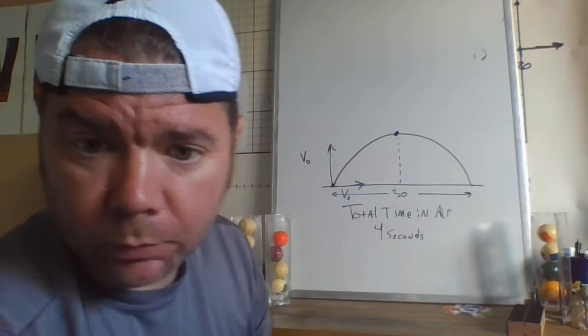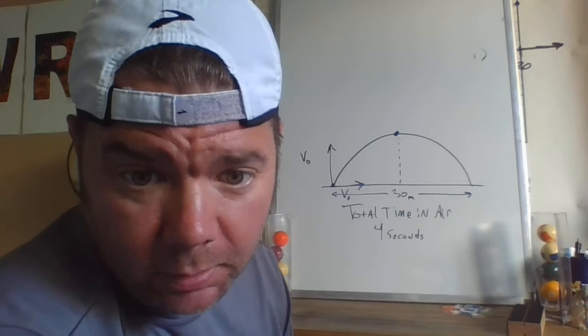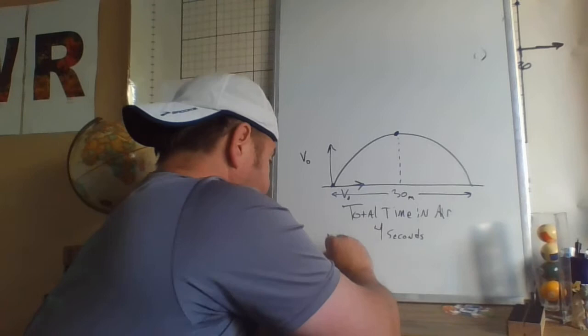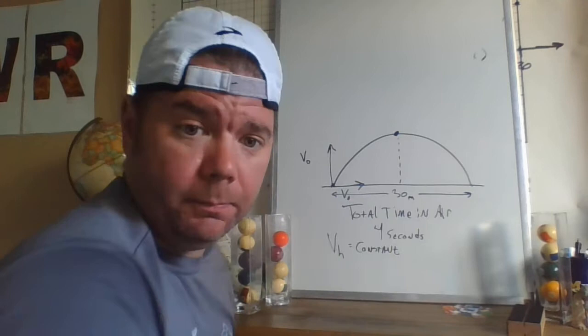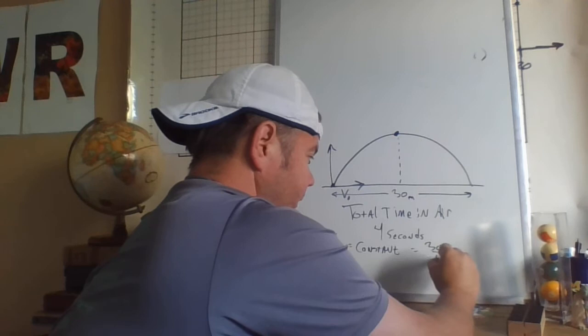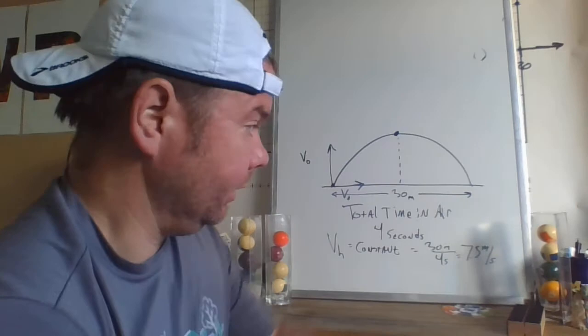If we know, let's do the horizontal first, if we know that the ball was in the air for four seconds and let's just say this is 30 meters, the ball's in the air for four seconds, I run 30 meters and I catch it. The horizontal velocity is constant, right, and horizontal velocity, that's just how far did it go and how much time did it take. So in this case with these numbers, we would have a horizontal velocity of 30 meters divided by four seconds, which is 7.5 meters per second.